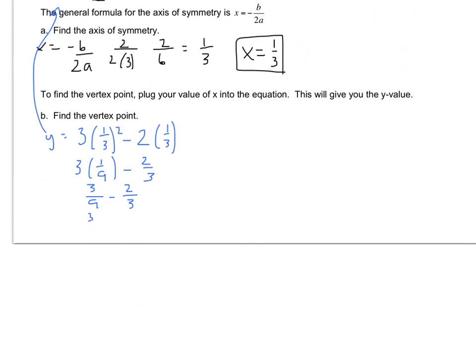Since I don't have a calculator handy, I'll get a common denominator. 3 ninths minus 6 ninths, and that is negative 3 ninths, which is negative 1 third. So the vertex point is 1 third comma negative 1 third.